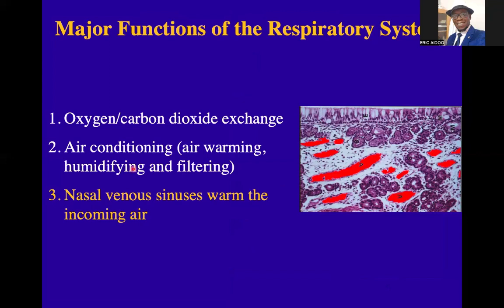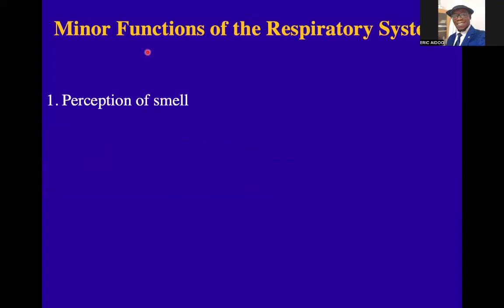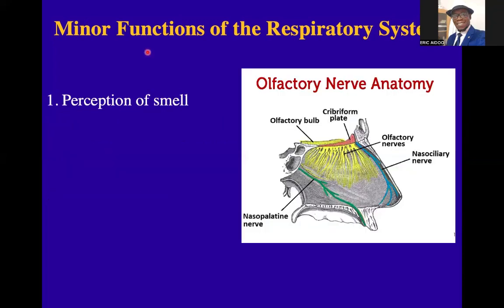The major functions of the respiratory system are to allow the exchange of oxygen and carbon dioxide, allow the warming and humidification of the air which has been filtered — termed air conditioning — undergoing the same phenomenon as the air conditioners we use in our offices and homes. The third major function is the nasal venous sinuses warming the incoming air. Minor functions include smell and the perception of smell via the olfactory nerves.